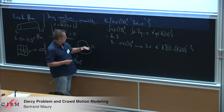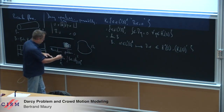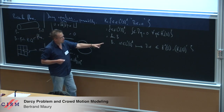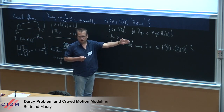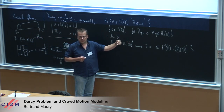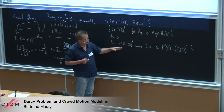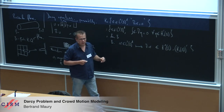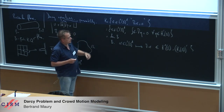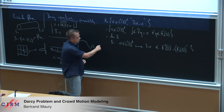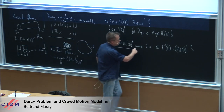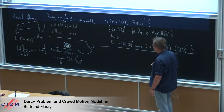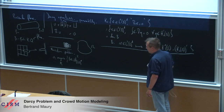The problem is well-posed because this operator has a closed range — it is surjective — and this is a direct consequence of the Poincaré inequality. So this is a general presentation of the Darcy equation.